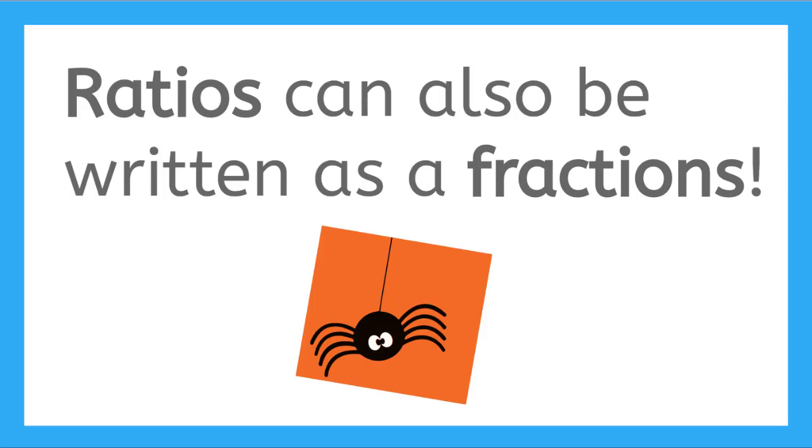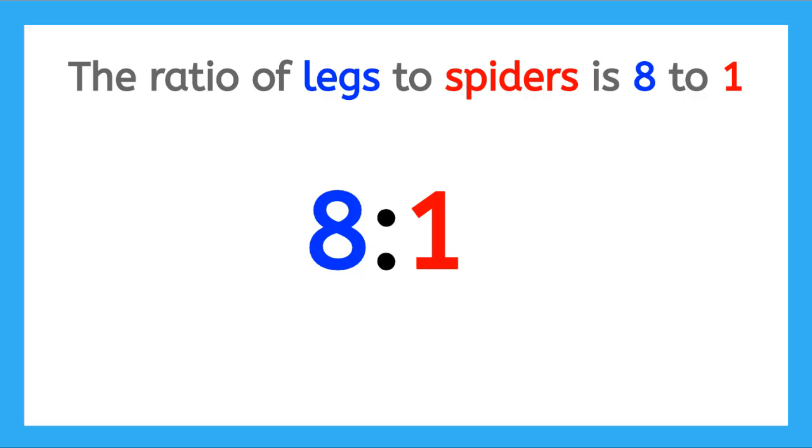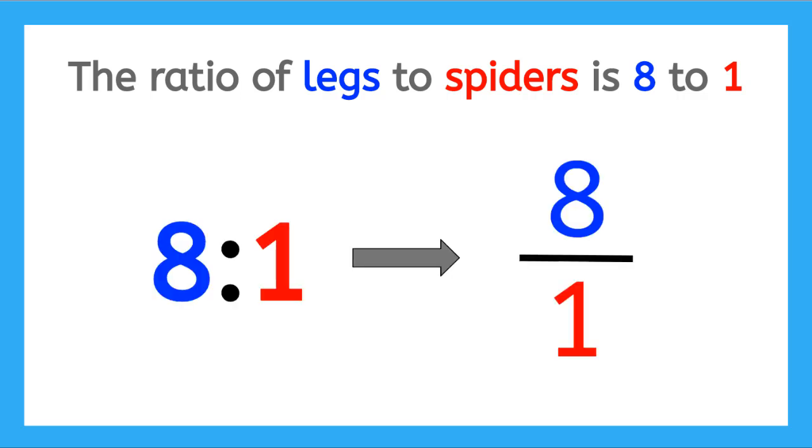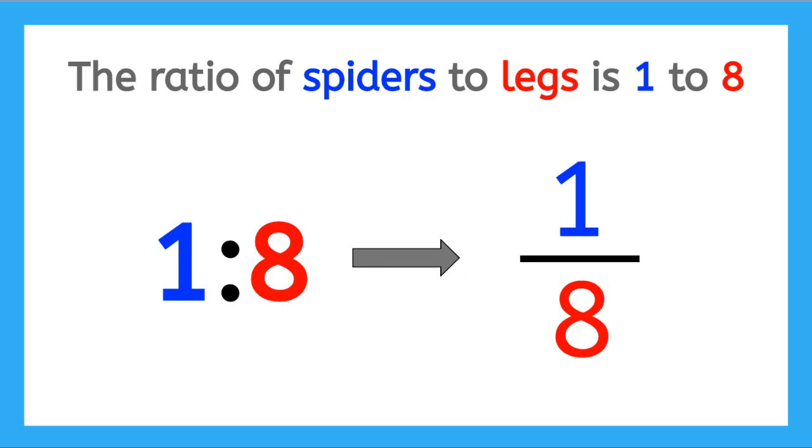Ratios may seem new to you right now, but you've probably been doing them for a while. A ratio can also be written as a fraction. Let's think back to our spider ratio. How do you think we could write our ratio for spiders to legs as a fraction? Remember the ratio of legs to spiders is eight to one. We can write it as a fraction that looks like eight over one. Or we can say the ratio of spiders to legs is one to eight and can be written as a fraction that looks like one over eight. Notice that even when we use fractions to represent ratios, the order of the numbers is still very important. The first number goes as the numerator of the fraction and the second number goes as the denominator of the fraction.